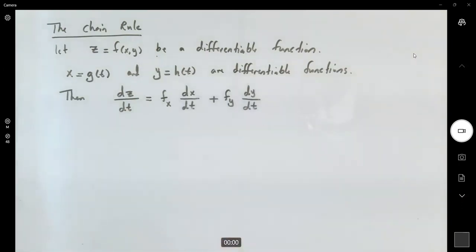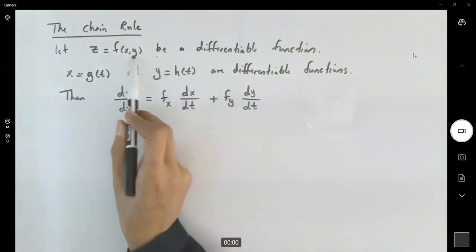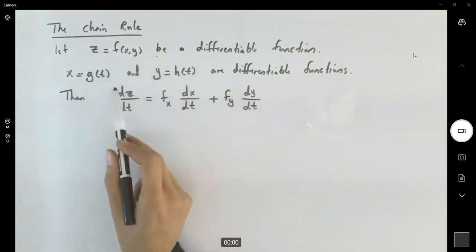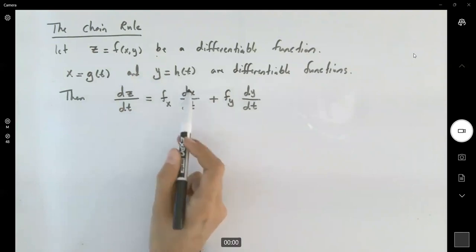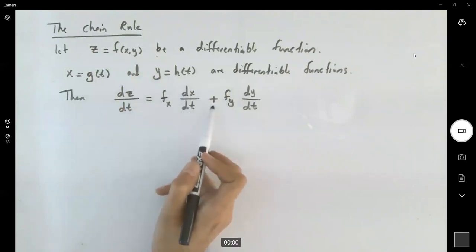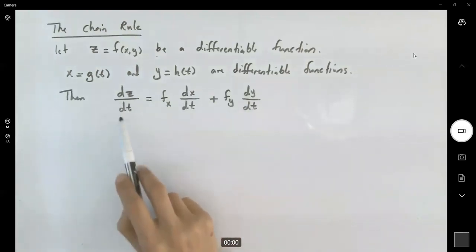This is using the chain rule in case one. You only have two free variables, x and y, and these two are dependent on a third variable like t. So dz/dt is the partial derivative of f with respect to x times dx/dt, plus fy, the partial derivative of f with respect to y, times dy/dt.